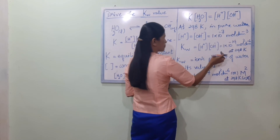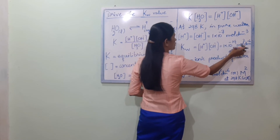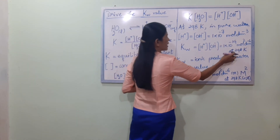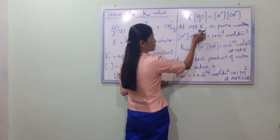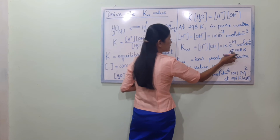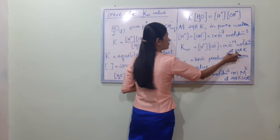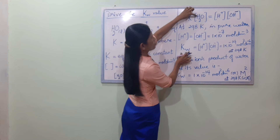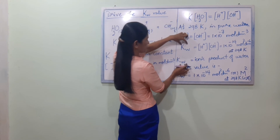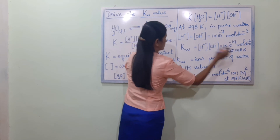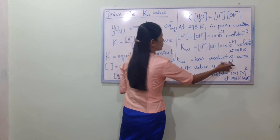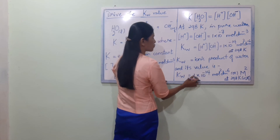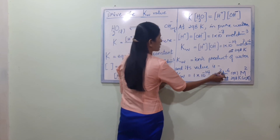So KW equals 1×10⁻⁷ times 1×10⁻⁷ equals 1×10⁻¹⁴ mol² dm⁻⁶. KW is the ionic product of water.